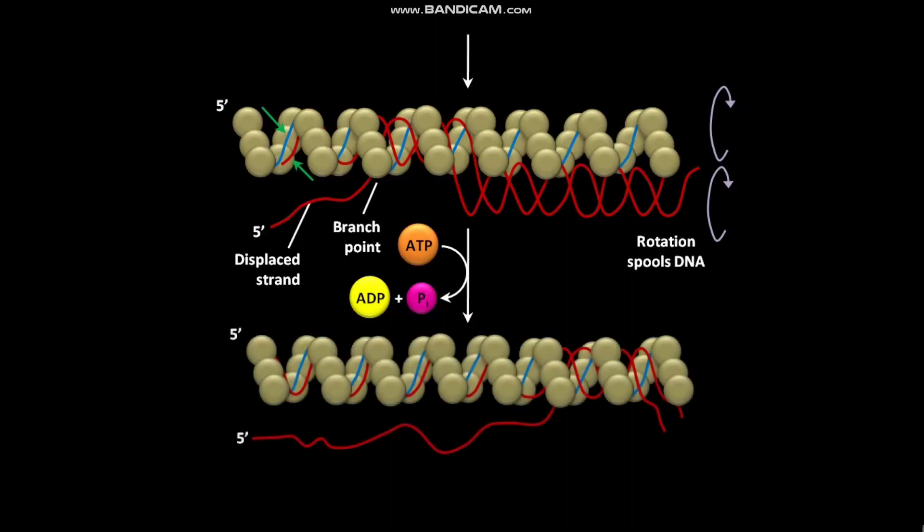This ATP hydrolysis promotes rotation of DS-DNA and SS-DNA relative to each other.